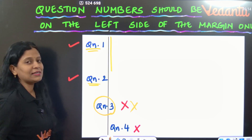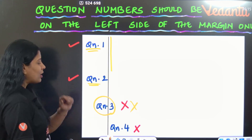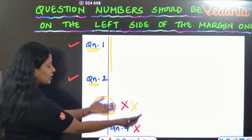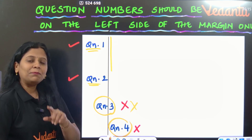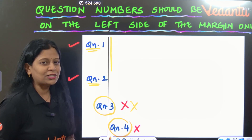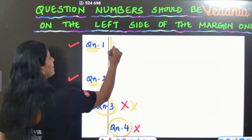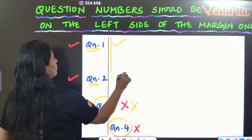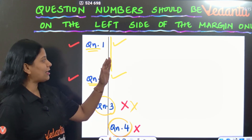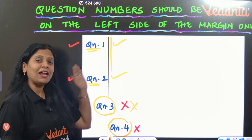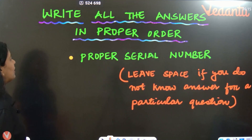Writing question numbers in any other position is the wrong method. In the booklet, the question number must be placed correctly. That is the wrong way. So this is the right way: question number 1 or question number 2 — whatever the question number is — that should be on the left side of the margin.